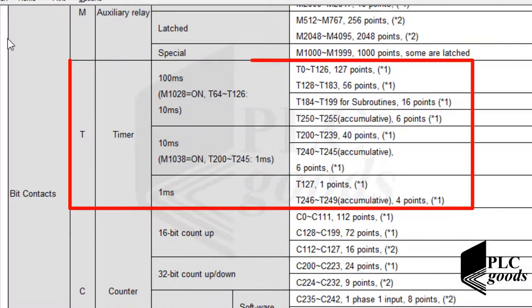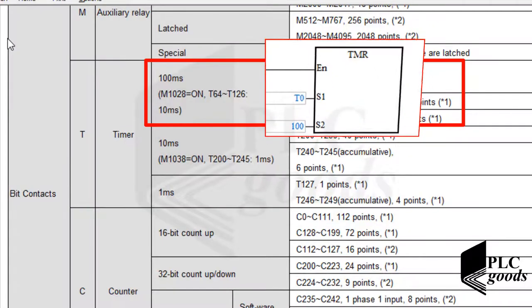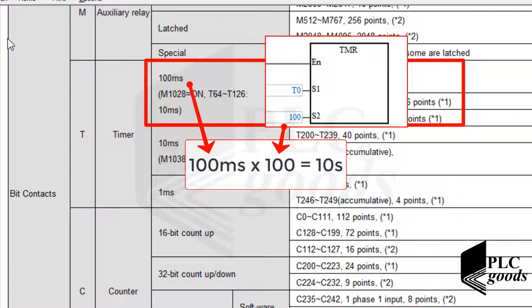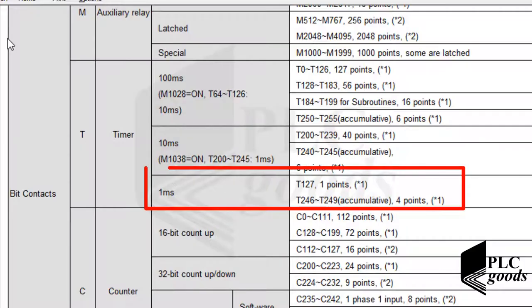Now let's look at timer types. The T0 timer belongs to the first group — I entered 100 for input S2 to define 10 seconds, because 100 × 100 milliseconds equals 10 seconds. Similarly, we can use other timer types which work based on 10 milliseconds and 1 millisecond. For example, let me rewrite the previous program using T127, whose time must be entered in 1-millisecond units.